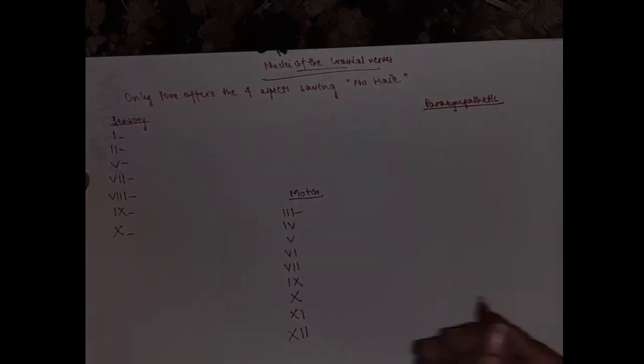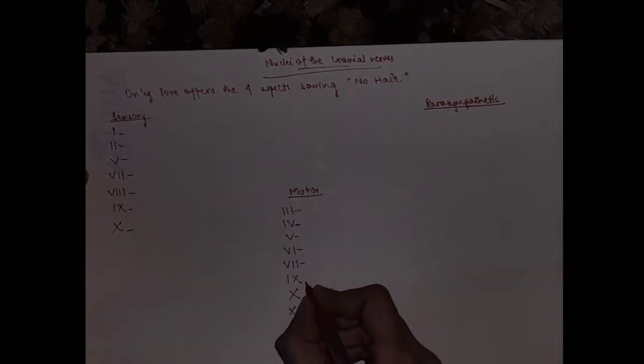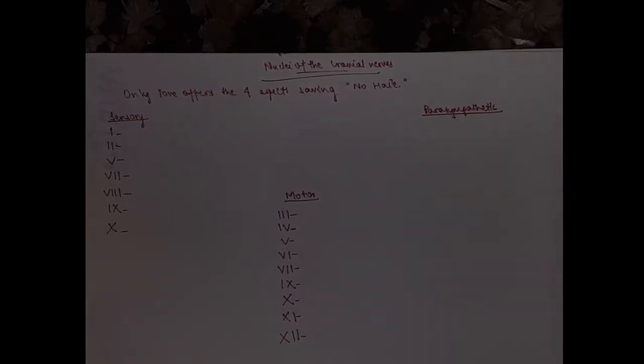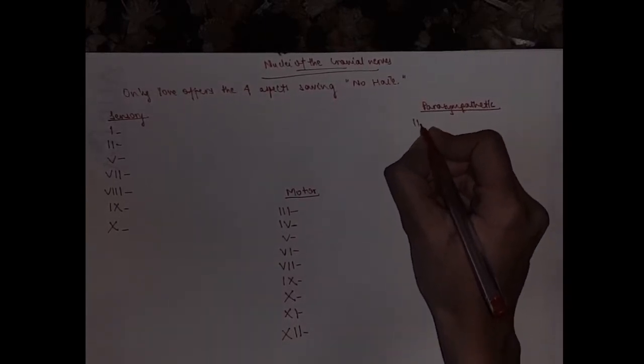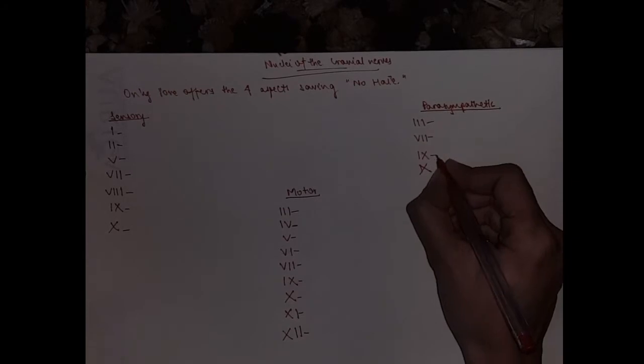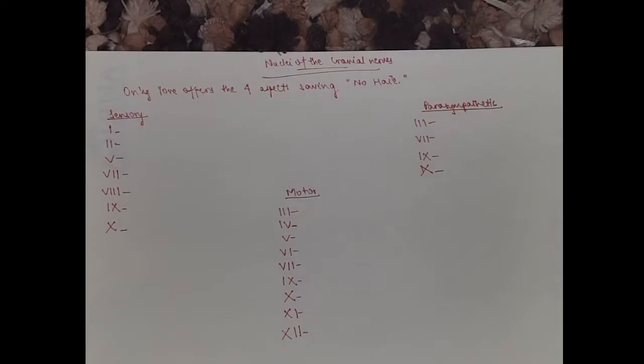And if you have watched my previous videos, by now you'll know the parasympathetic nerves and their nuclei and where they're situated. But we'll go through it again, so we'll go three, seven, nine, and ten. And also by now you should know what numbers stand for which of the cranial nerves.